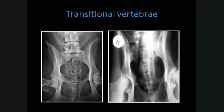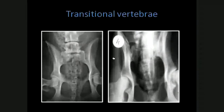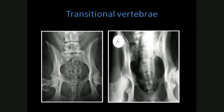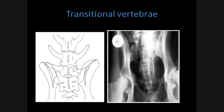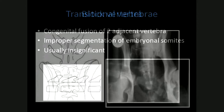Here's another example at the lumbosacral junction. On the left is a normal image of L7 with two transverse processes on either side. On the right, the last lumbar vertebra has a broad, misshapen transverse process and on the left-hand side is starting to fuse with the sacrum and the ileum. So there's sacralization of the last lumbar vertebra bilaterally — L7 is essentially becoming a sacrum, having fused to the sacrum and also to the wing of the ileum.